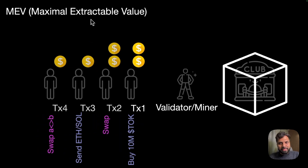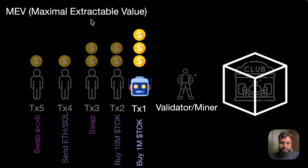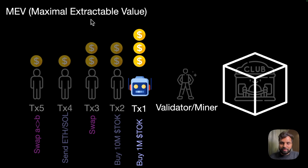Similarly, there can be a scenario where there is a bot which is monitoring all the transactions, with a predefined condition: whenever there is a huge token order, place a transaction with higher gas price. As you can see, transaction number one is for 1 million TOK tokens which is sent with higher gas price before the 10 million TOK token transaction, which is now transaction number two. So this is also called front-running, and this is how MEV takes place.